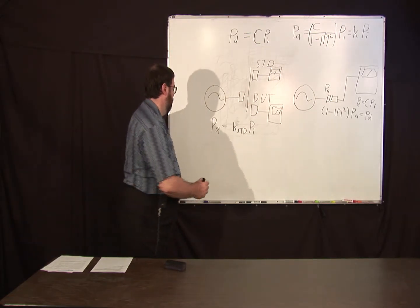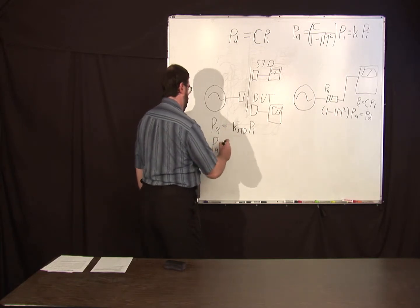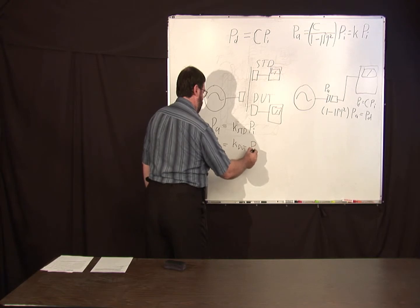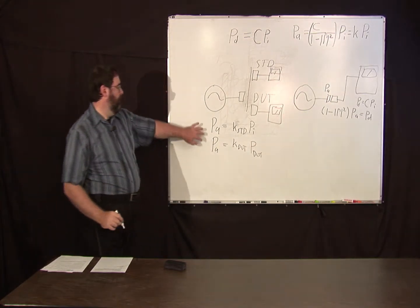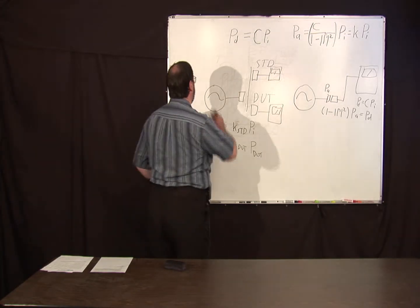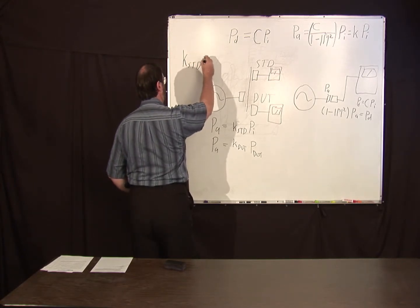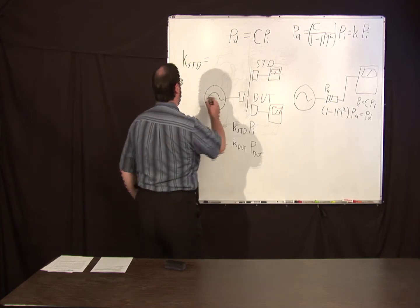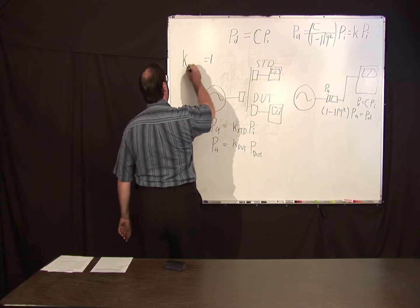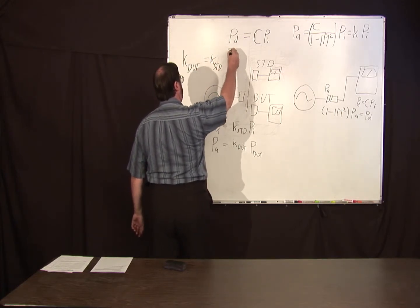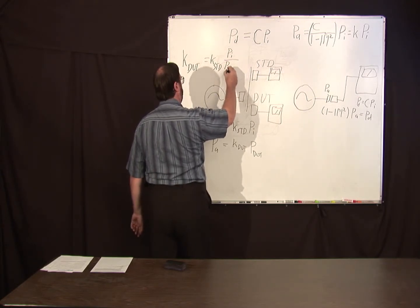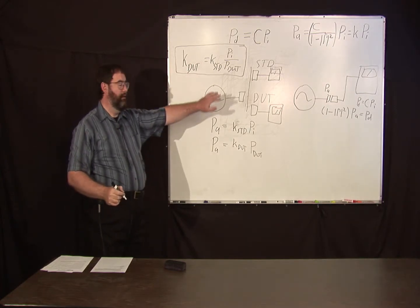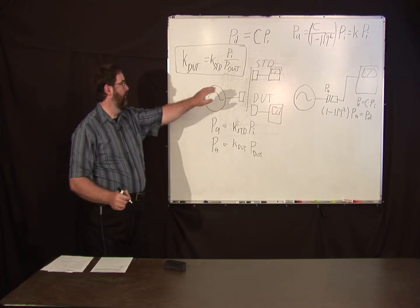Then we put the DUT on there, and we measure the available power, we measure some power. It's going to be K dot, device under test, P dot. So you can see, we can solve between these two, we can solve for this. K DUT is K standard times P I over P dot. So that's one way of calibrating a power meter once you have something calibrated from calorimetry.